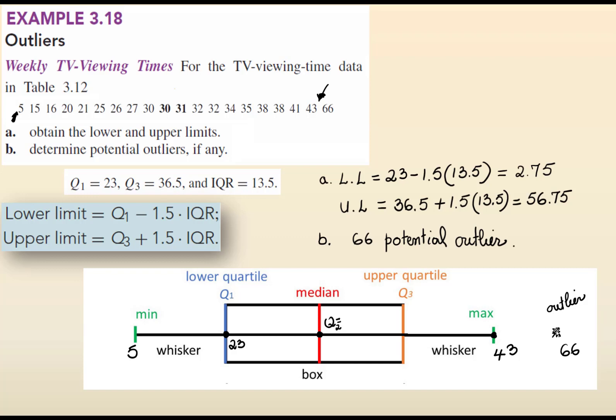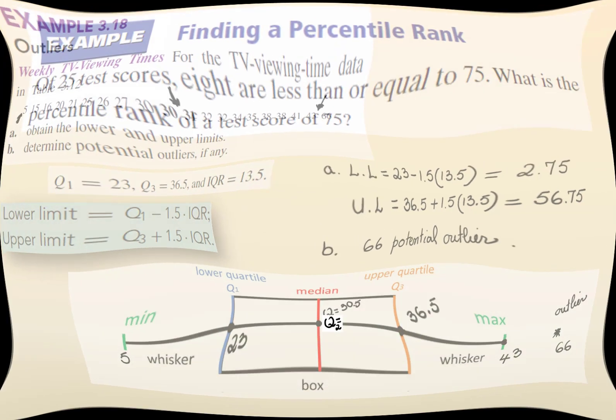The median, second quartile, is between 30 and 31, so it's 30.5. The third quartile was already determined. The third quartile is 36.5. By the way, the interquartile range is usually not mentioned on the box plot.